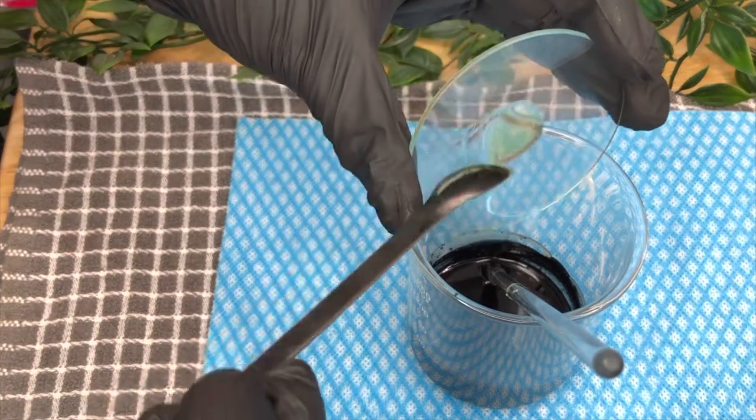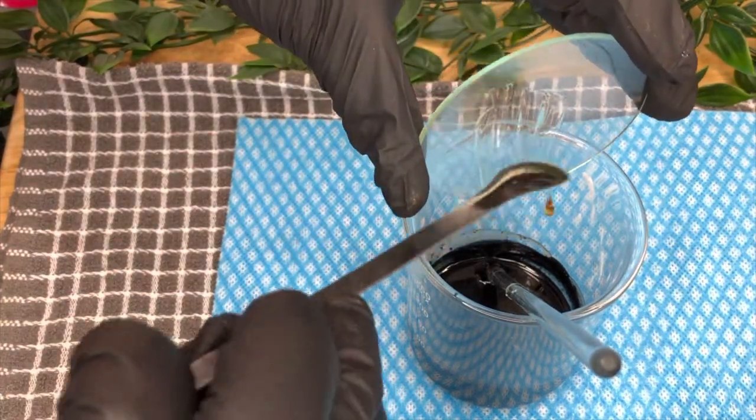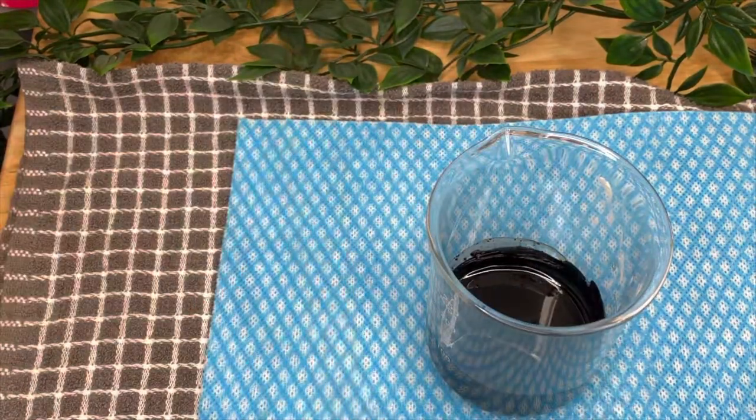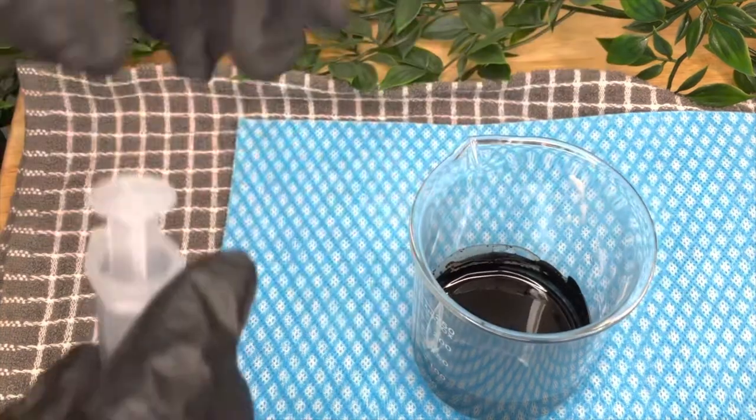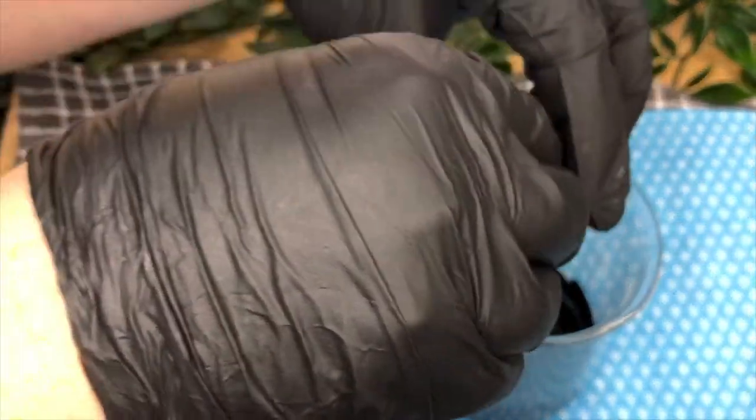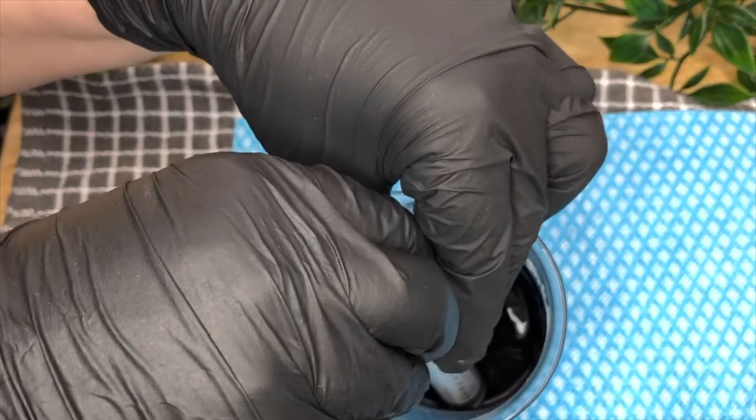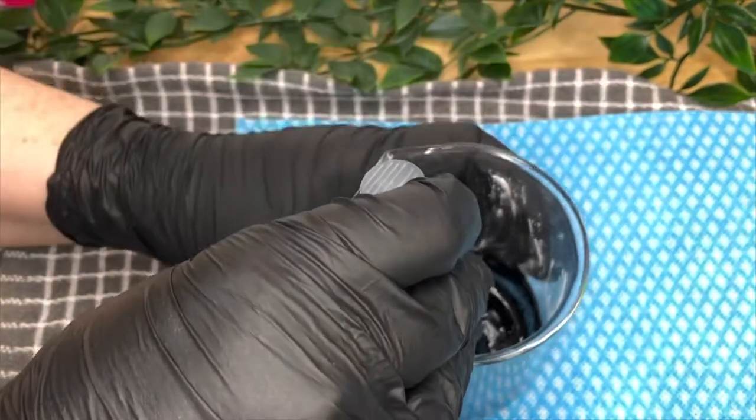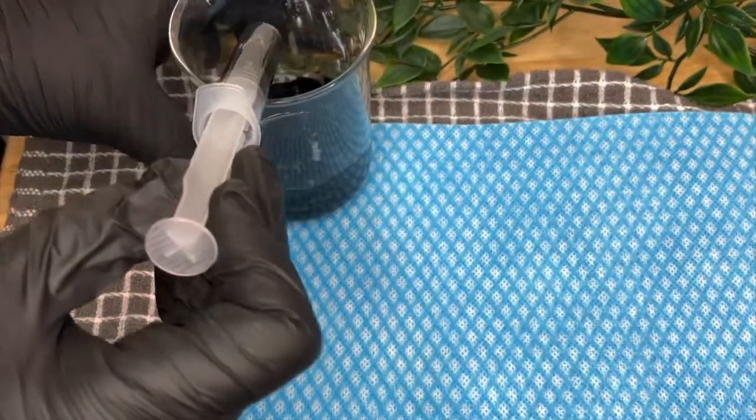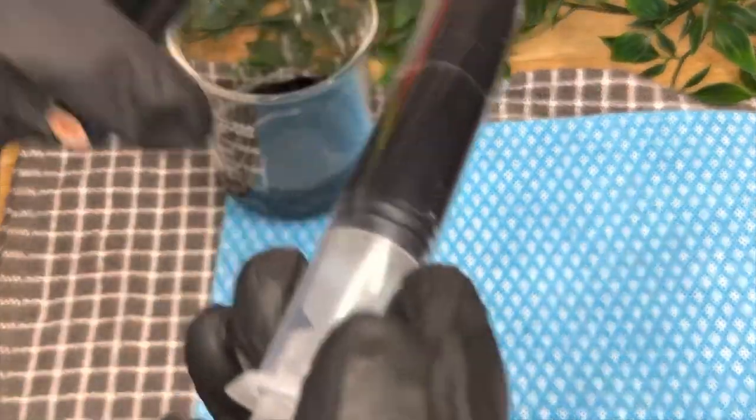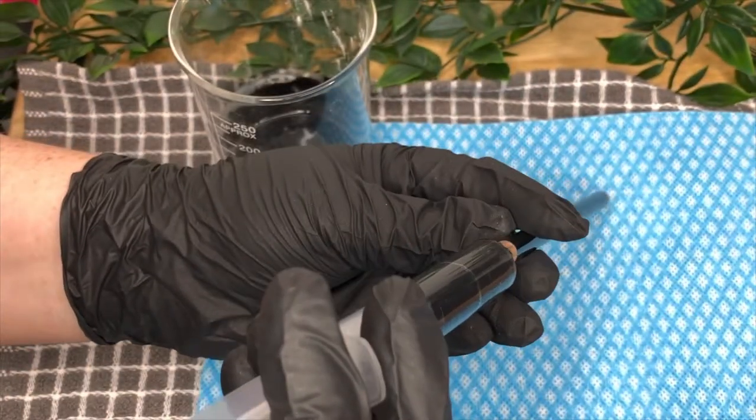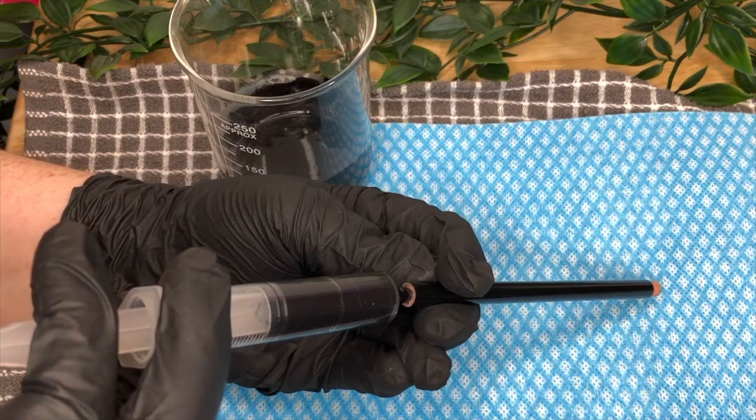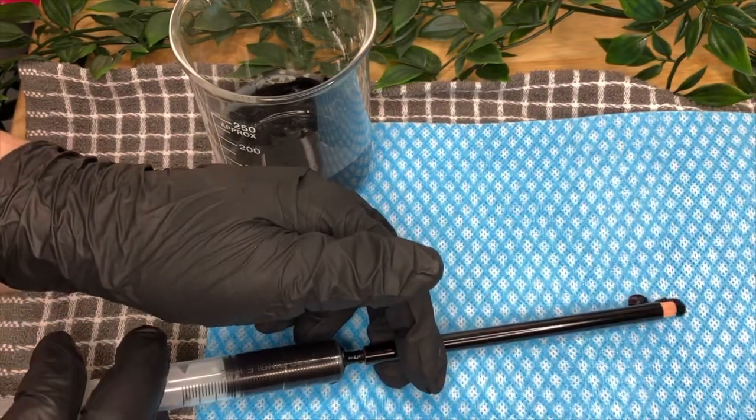Once the mixture's cooled to 40 degrees Celsius, you can add your vitamin E and mix well. Now, while the mixture is still liquid, take a syringe and draw up as much as you can. Taking your empty pencils, go from the end and just push the liquid in until you see it come out the other end, and then lay it flat to set.